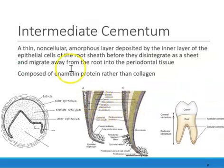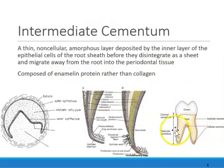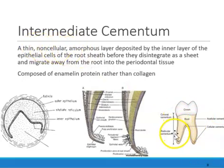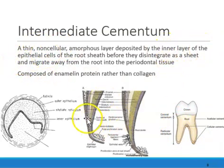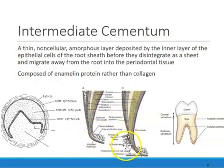Let's recap one more time. The cementum deposited on top is a thin layer — it's non-cellular, it's acellular, there are no cells in that cementum. It came from the inner layer of the epithelial cells of the root sheath. Then they disintegrate into epithelial rests and move away.